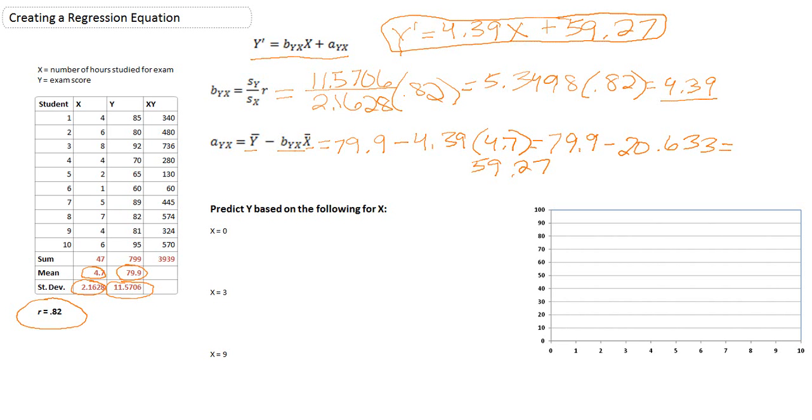Now, why don't we go through making some predictions. Let's say, for example, we have a student who studied 0 hours for the exam. And we want to know, based on a regression equation, what can we predict that student's score to be? Using this equation, what we will do is take 4.39 multiplied by whatever our x is. In this case, 0. Then, add 59.27. Anything multiplied by 0 is 0. So, 0 plus 59.27 is 59.27.